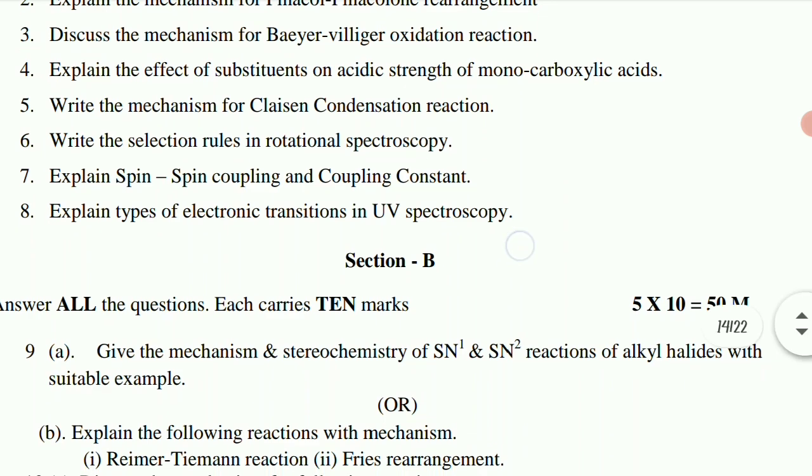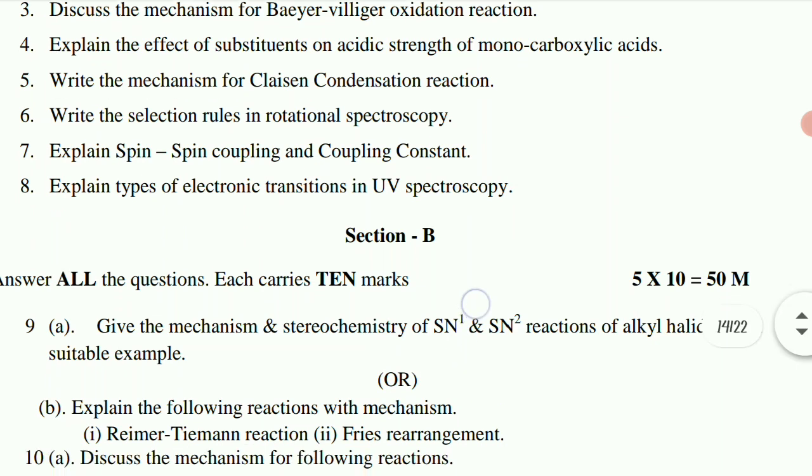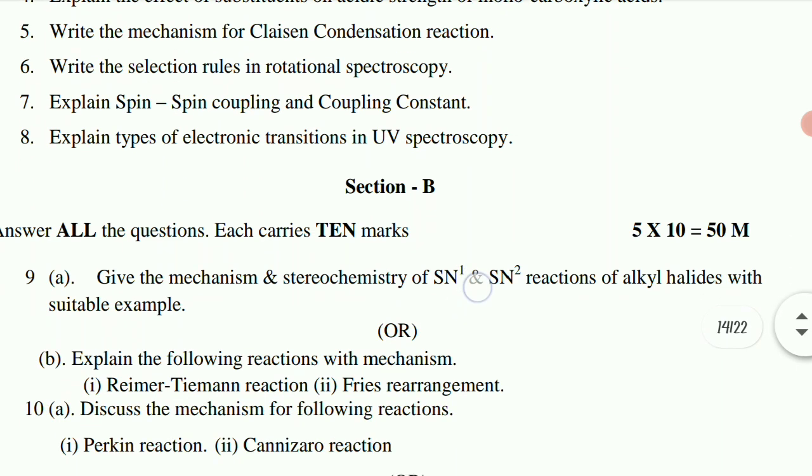Ninth: A. Give the mechanism and stereochemistry of SN1 and SN2 reactions of alkyl halides with suitable examples. B. Explain the following reactions with mechanism: first one, Reimer-Tiemann reaction; second, Fries rearrangement.